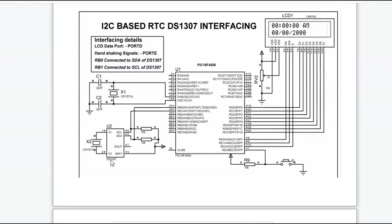The figure shows I2C-based RTC DS1307 interfacing. Here we have the PIC18F4550 microcontroller, and we are interfacing it with the DS1307 RTC (Real-Time Clock). The DS1307 has two lines: SCL and SDA. The SCL of DS1307 is connected to pin RB1, which is also the SCL of the PIC18F controller. The SDA line of DS1307 is connected to pin 33, which is the SDA of the PIC18F controller.